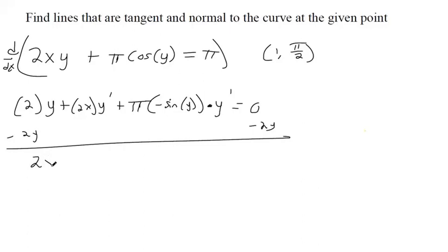So I get 2x y prime. And then, it's plus pi times a negative. So I'm going to change this to minus pi sine y times y prime.